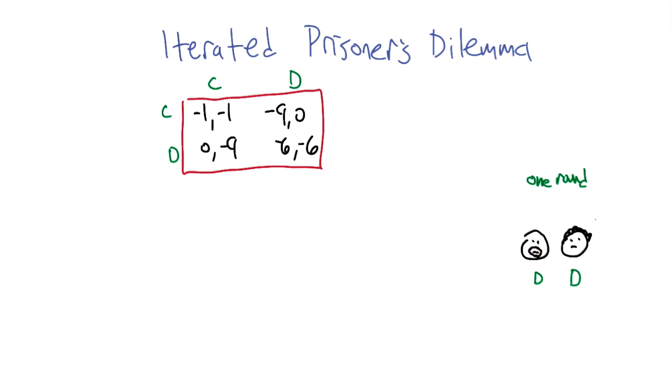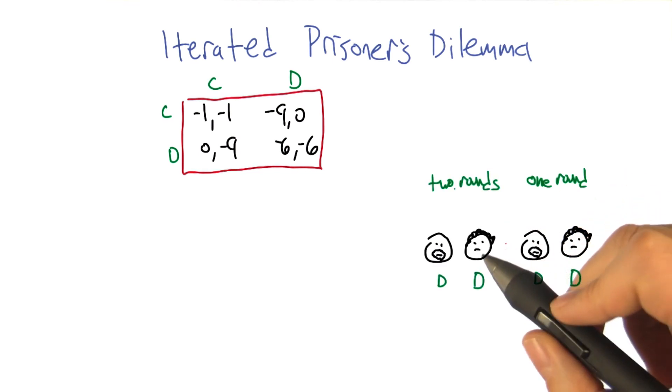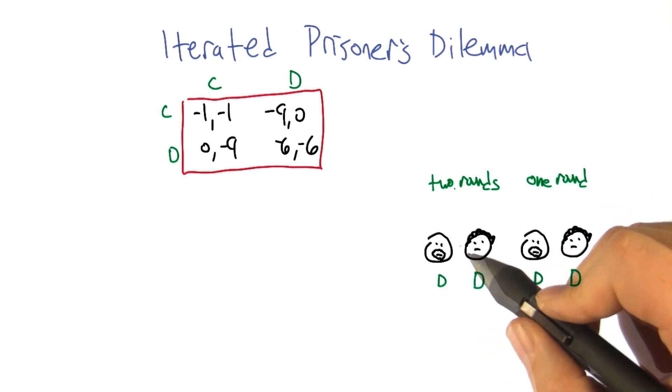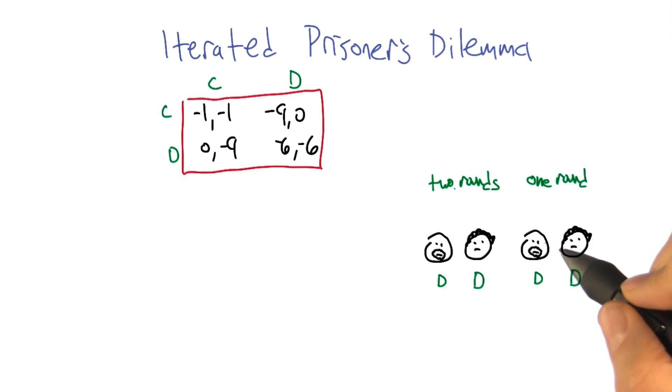So we said, all right, what happens if we allow there to be more than one round? So now we've got two rounds. And what we realized was that if you've got two rounds to go, then these players essentially face a one round game, because after this round, what they're going to do in the last round has already been determined.